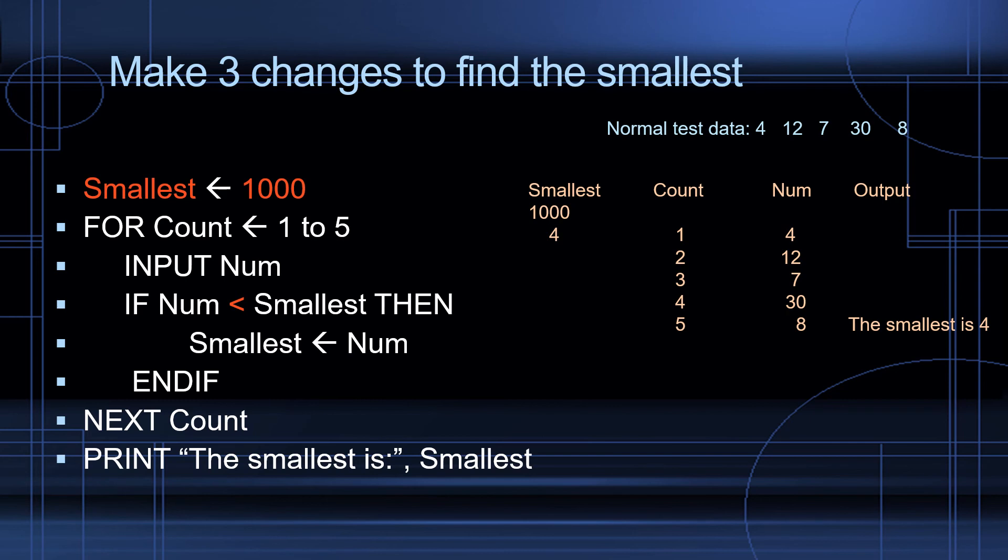Let's look at how this loop runs. So here's our trace table. These are the variables that we have. Smallest, count, num, and output. First smallest is 1,000. Count is equal to 1. Input the first number 4. Is 4 smaller than 1,000? It is. So we're going to replace smallest by 4. Count equals 2. Input 12. Is it smaller than 4? It's not. Count equals 3. Input 7. Is it smaller than smallest? It's not. Count equals 4. Input 30. Is it smaller than smallest? It's not. Count equals 5. Input 8. Is it smaller than smallest? It's not. So finally, we're going to output print. The smallest is smallest.